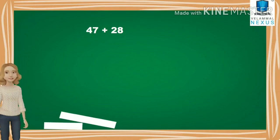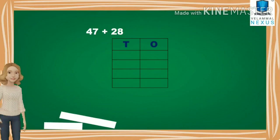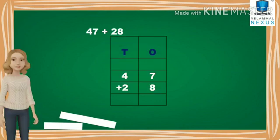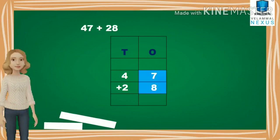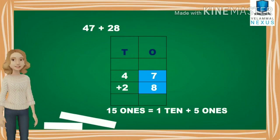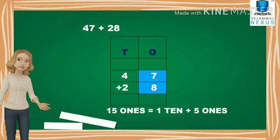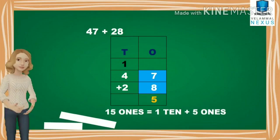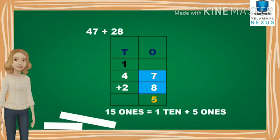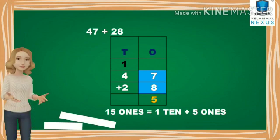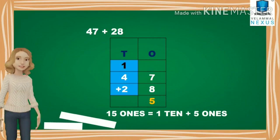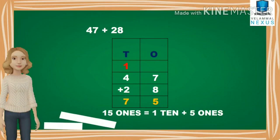Here we are going to add 47 with 28. First, we are going to place the numbers in the place value chart. Now we are going to add the digits in the ones place — we have 7 and 8. Seven plus eight is equal to 15. We have 15 ones, which is equal to 1 ten and 5 ones. So we write the 5 ones in the ones column and carry 1 ten to the tens column. Then we add the digits in the tens column: 1 plus 4 plus 2 is equal to 7. So 47 plus 28 is equal to 75.